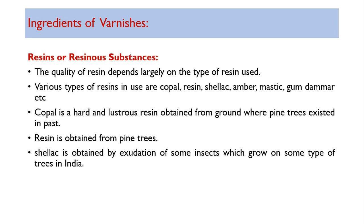Resins are granules from trees, normally from pine trees, so copal is the best — hard and lustrous, obtained from pine tree resin. Shellac is obtained by exudation of some insects which grow on some types of trees in India.